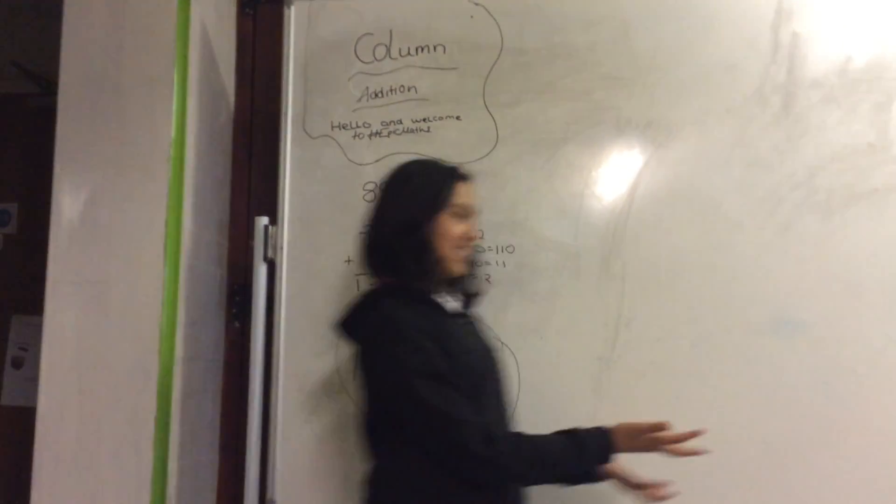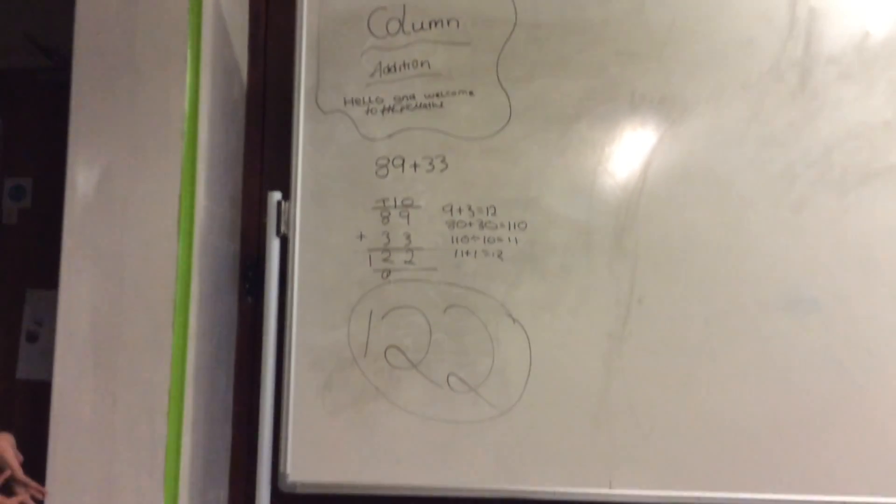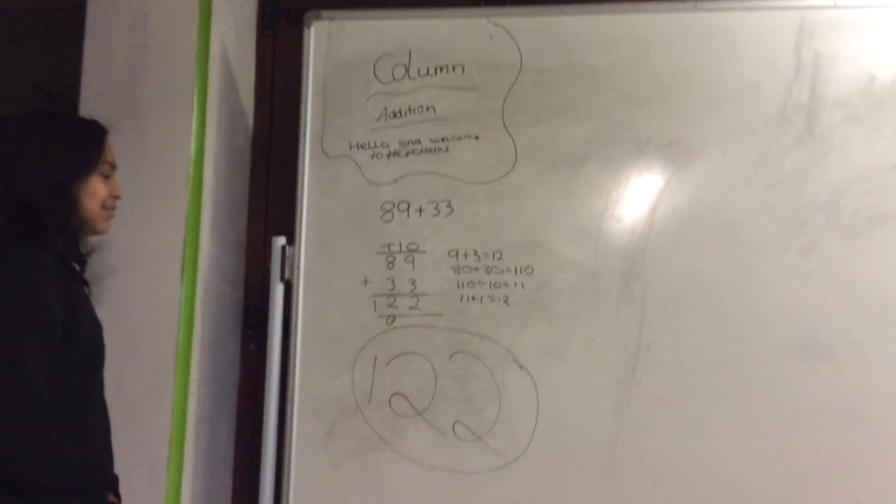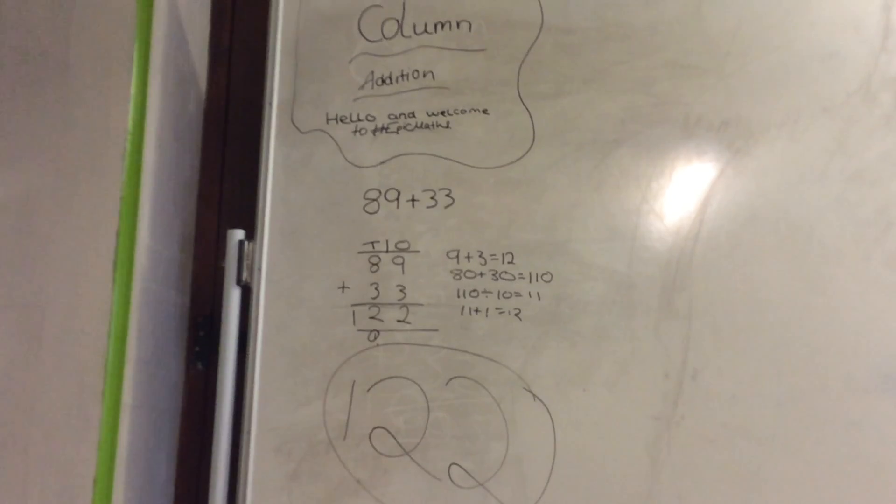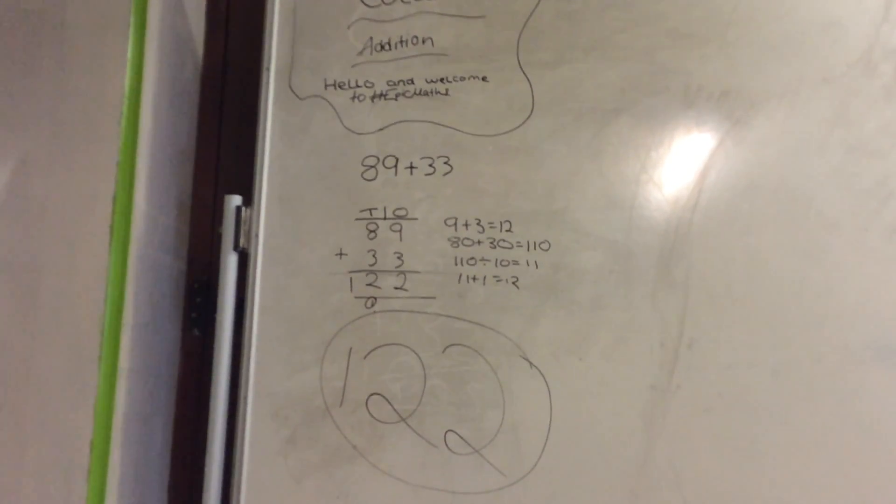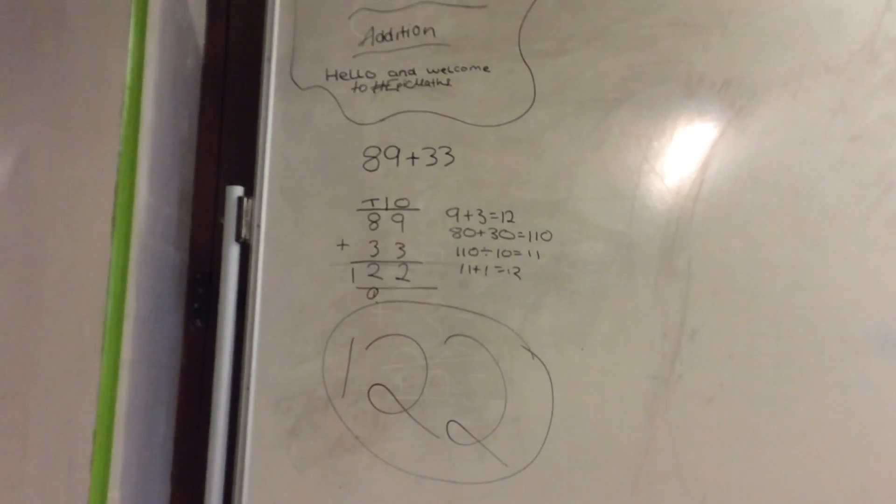The answer is 122. So first of all, you do 9 plus 3, which is 12. Then 80 plus 30, which is 110. Then 110 divided by 10 equals 11. And then 11 plus 1 equals 12, and then 22.